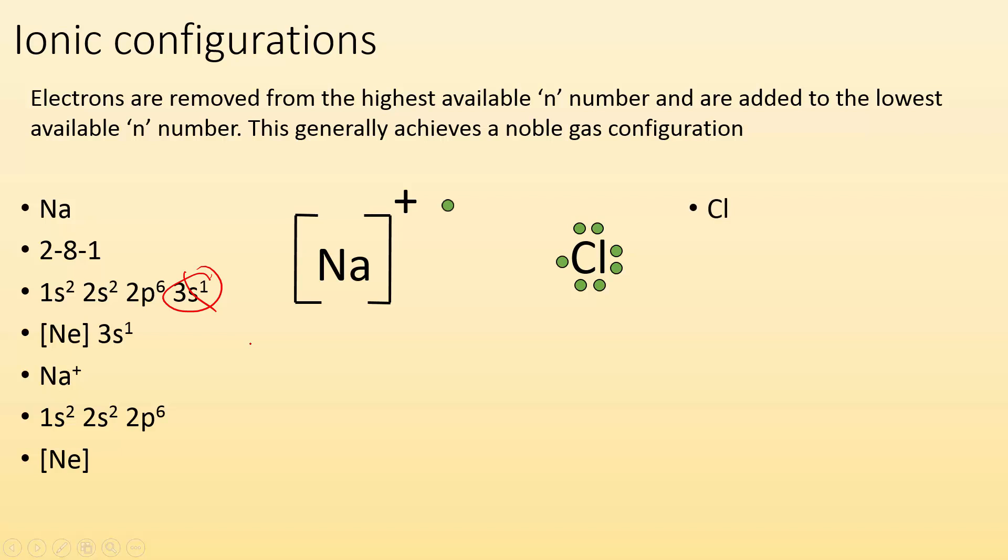So let's talk about chlorine. Well, chlorine is 2-8-7, but then it's gaining this electron, right? So its expanded configuration is 1s2, 2s2, 2p6, 3s2, 3p5. And if we want to abbreviate it, it would be neon and then 3s2, 3p5.